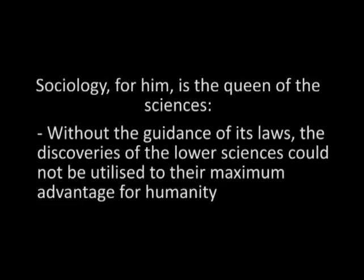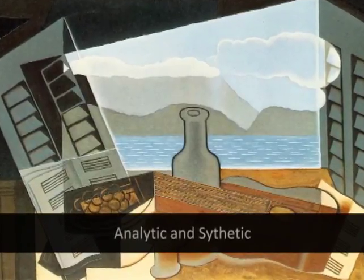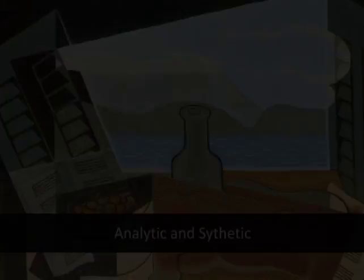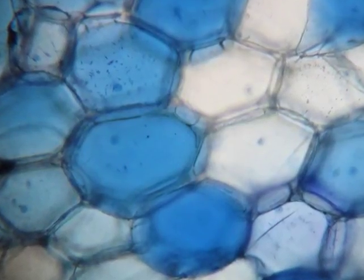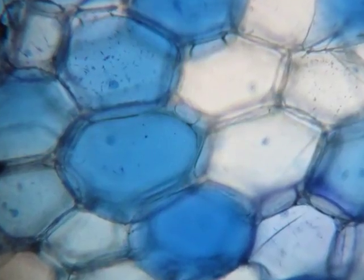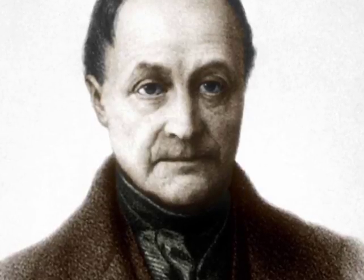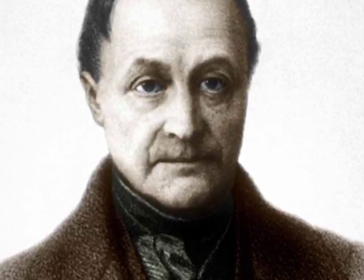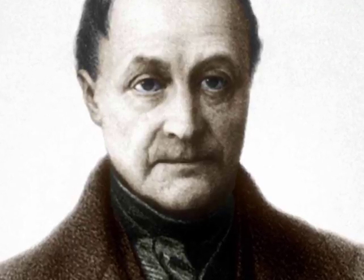Sociology for Comte is the queen of sciences because without the guidance of its laws, the discoveries of the lower sciences could not be utilized to their maximum advantage for humanity. There are two kinds of sciences: analytic and synthetic. Physics and chemistry are analytic because they establish laws among isolated phenomena. Biology is synthetic because it is impossible to explain an organ apart from the living creature as a whole. Likewise, according to Comte, sociology is synthetic because everything — be it religion or state — has to be studied in the context of entire society.